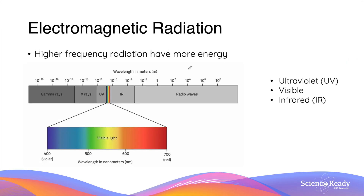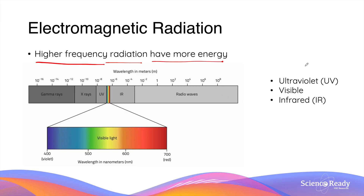Here's a quick reminder of electromagnetic radiation. EMR consists of different types of waves — gamma waves on one end and radio waves on the other end of the spectrum. These waves have different frequencies and wavelengths. Higher frequency EMR has more energy, so gamma rays have the most energy and radio waves have the lowest. In this module we'll be looking at three particular types of EMR: ultraviolet, visible light, and infrared.